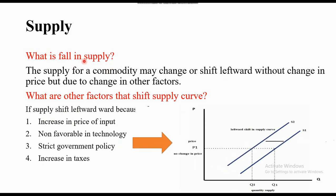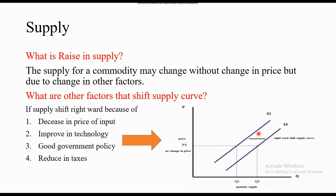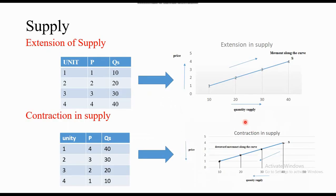When supply falls due to a change in other factors, the supply curve shifts to the left — leftward means above, which is the sign of a fall. When supply is reduced due to other factors, the movement is from S1 to S2 leftward. There is no change in price; rather, other factors are unfavorable and the producer is not profitable, so supply reduces. In extension and contraction, we move along the curve; in rise and fall, the curve itself shifts.